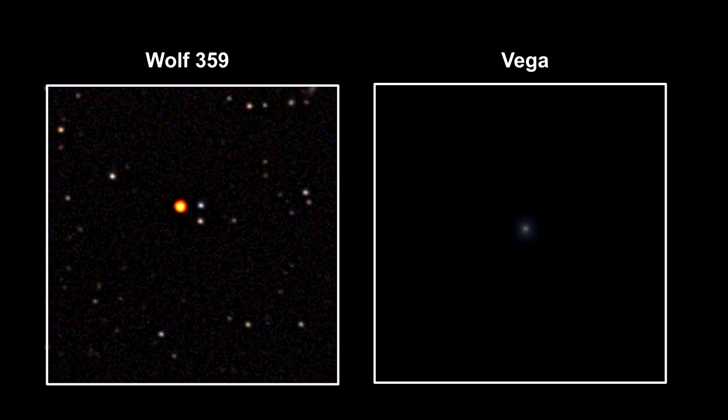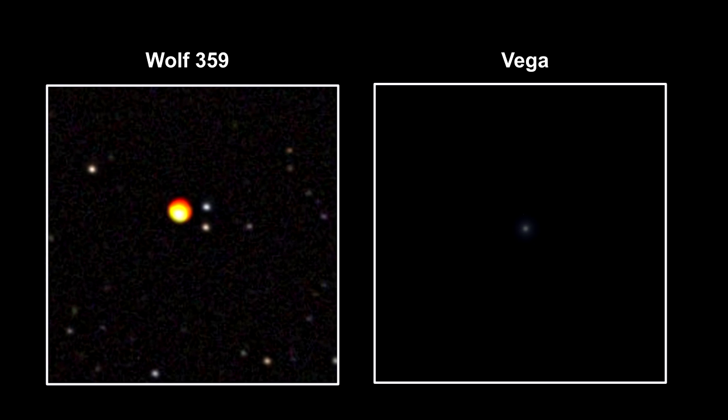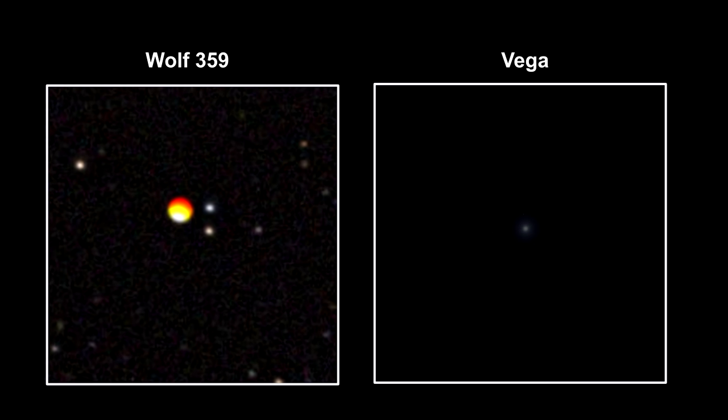An intrinsically faint, nearby star can appear to be just as bright to us on Earth as an intrinsically luminous star further away.